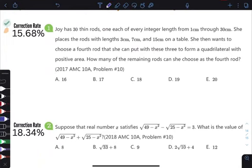Joy has 30 thin rods, one of every integer length from 1cm to 30cm. She places rods with lengths 3, 7, and 15 on the table. Then she wants to choose a fourth rod that she can put with these three to form a quadrilateral with positive area. So a quadrilateral with positive area just means a normal quadrilateral. How many of the remaining rods can she choose as a fourth rod?